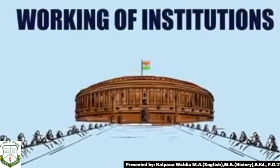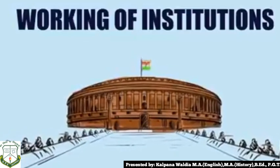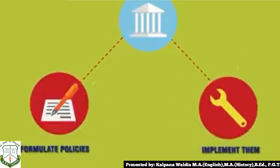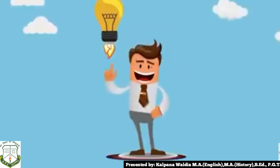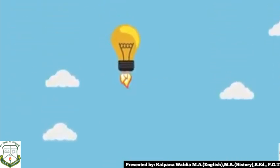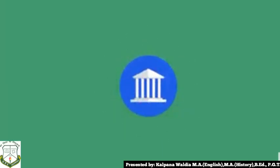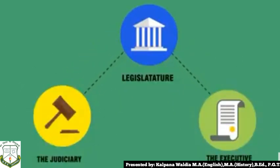Why do we need political institutions in a country? We need them for the following reasons. A government has to perform various duties, formulate policies and implement them. Some have to formulate schemes, some have to take decisions, and some have to implement those decisions. The constitution lays down the basic rules, powers, and functions of each institution. These institutions are the legislature or parliament, the executive or the government, and the judiciary, i.e., the legal system.